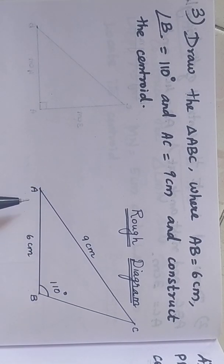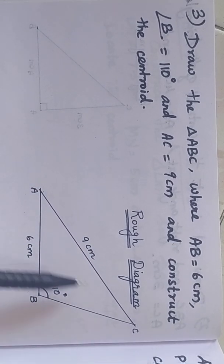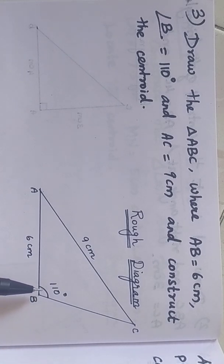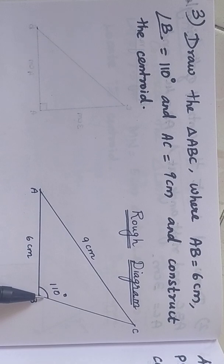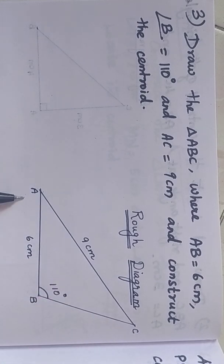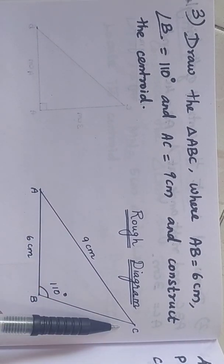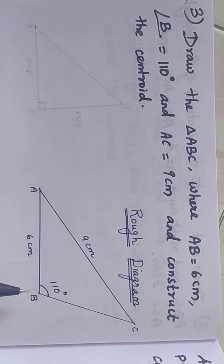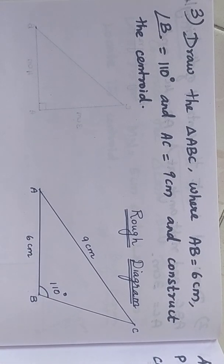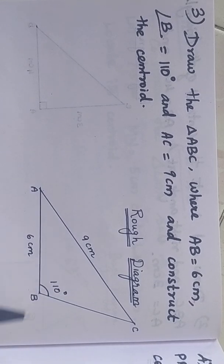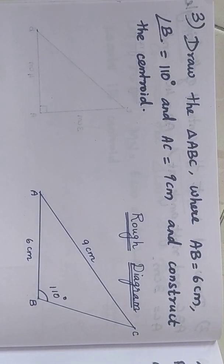First, let us draw the rough diagram showing ABC is an obtuse triangle because 110 is an obtuse angle. Let us draw the triangle like this. AB is equal to 6 cm and AC is equal to 9 cm, taking the measure of angle B equal to 110 degrees. After drawing the rough diagram, let us draw the fair diagram.